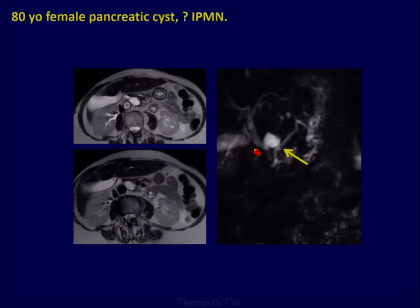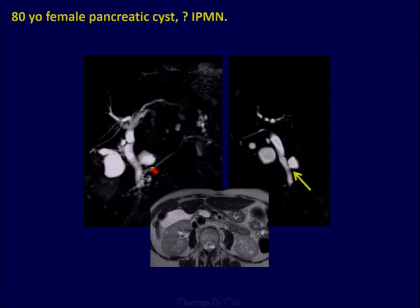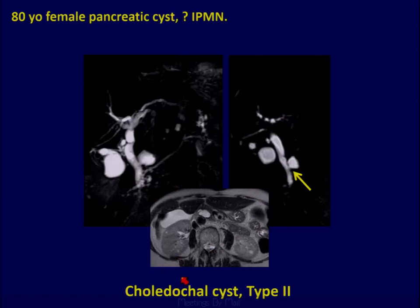This is a lesion where we thought we had established communication with the main pancreatic duct and were dealing with an IPMN with ductal communication. But with better sequence development and more 3D acquisitions, it turned out that ductal communication was actually with the common duct, not the pancreatic duct. So what we'd been calling IPMN all along turned out to be a type 2 choledochal cyst.